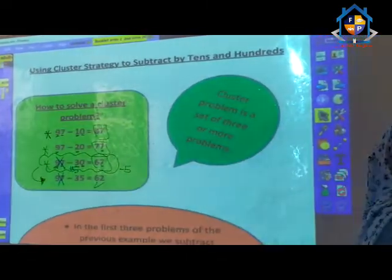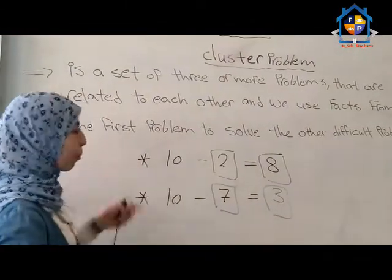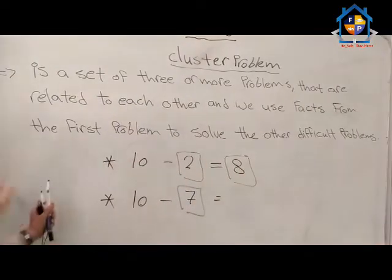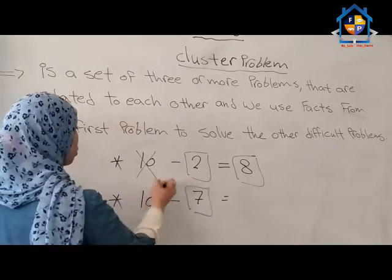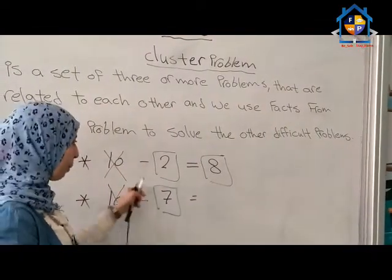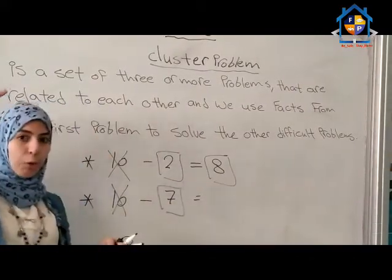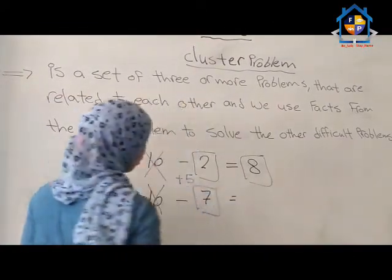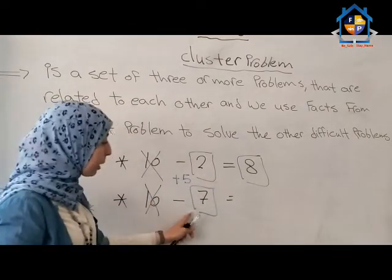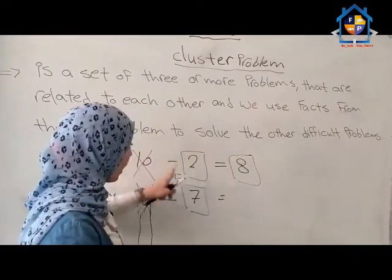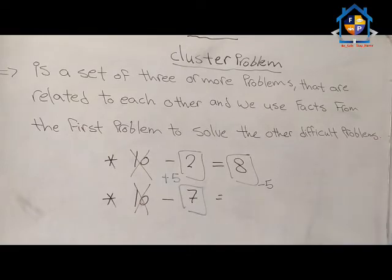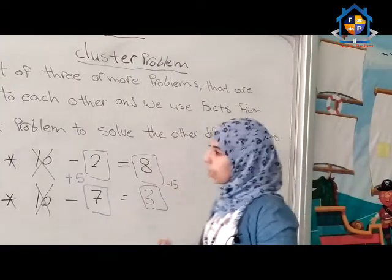In our first exercise, as we said: the first problem was 10 minus 2, the second problem is 10 minus 7. The same number 10 — so ignore it. In the first problem I had 2; in the second problem I have 7. What happened? 2 increased by 5 — after 2: 3, 4, 5, 6, 7. So when I subtracted a small number the remainder was big, and when I subtracted a big number the remainder was small. I added 5 on the left side, so I will subtract 5 on the right side. 8 minus 5: after 5 — 6, 7, 8 — the answer is 3. And this is the cluster strategy.